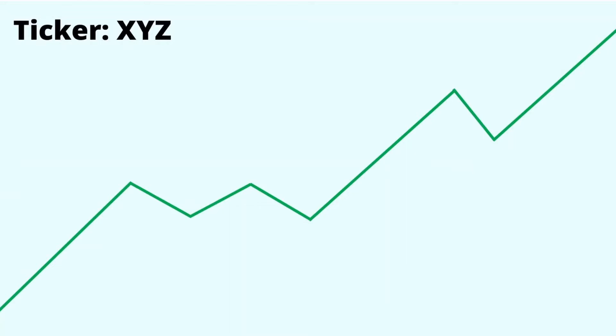We're going to learn about resistance and support lines — they're as easy as they sound. We'll use this example here and then look at a real ETF, the S&P, for a practical example. So if we have ticker XYZ, our fake little company, here's its chart going up. What we can do is predict where some resistance and support lines are.